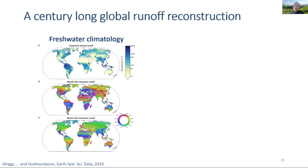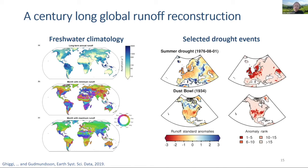We can also look at more dynamical features, exemplified here in two significant drought events: one in Europe in the summer of 1976, and one in the US in the 1930s, also referred to as the US Dust Bowl. Standardized runoff anomalies clearly show both events in the dry range, and the rank of the anomaly shows that in both cases these reportedly extreme events ranked among the top five driest events in these regions over the entire 20th century timeframe.